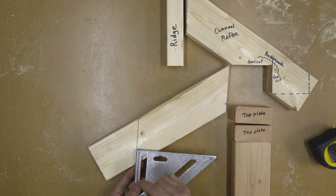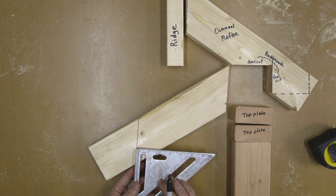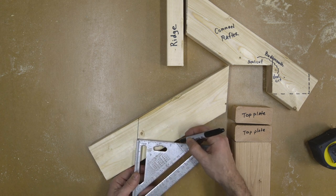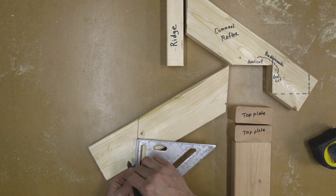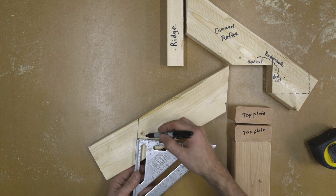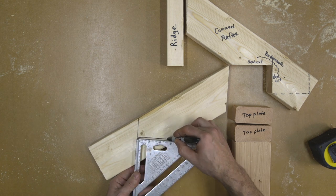Next up, I use this part of the speed square and I run this up until I get to my three and a half mark. And then as long as I'm lined up here at three and a half, I can draw a line across like this.